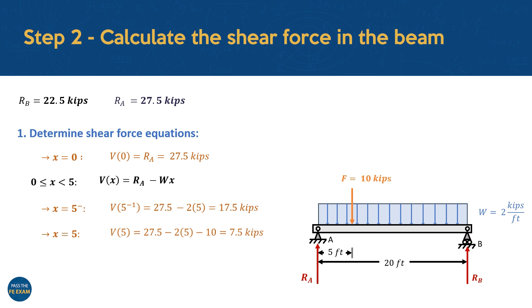Moving on to the next section of the beam, we notice that the point load will cause a sudden drop in shear force equal to the magnitude of the load itself. This causes an immediate 10 kip drop, bringing the shear force down to just 7.5 kips at the applied load.